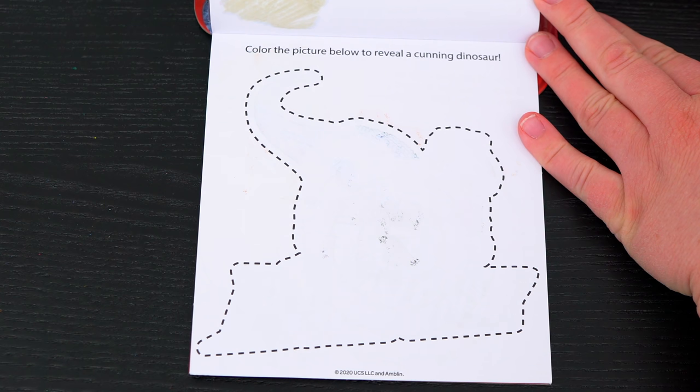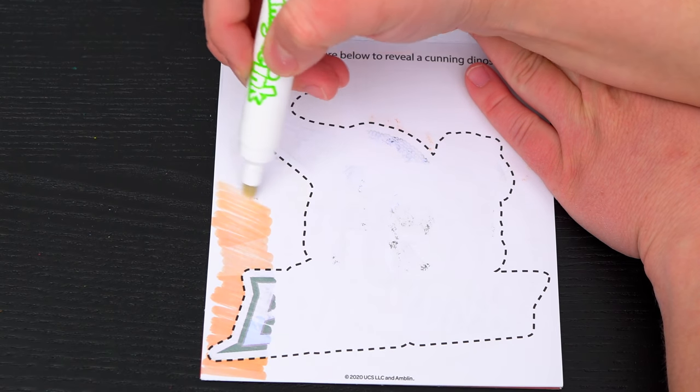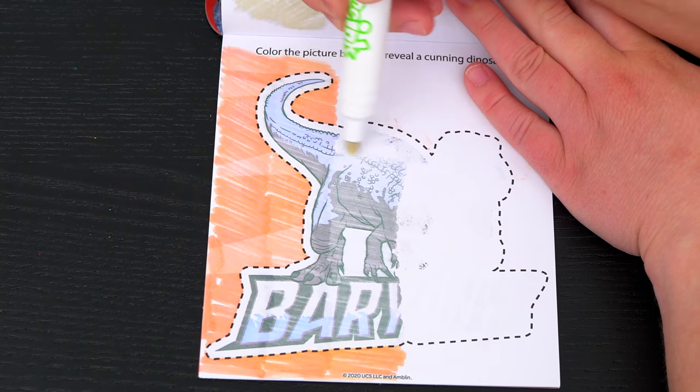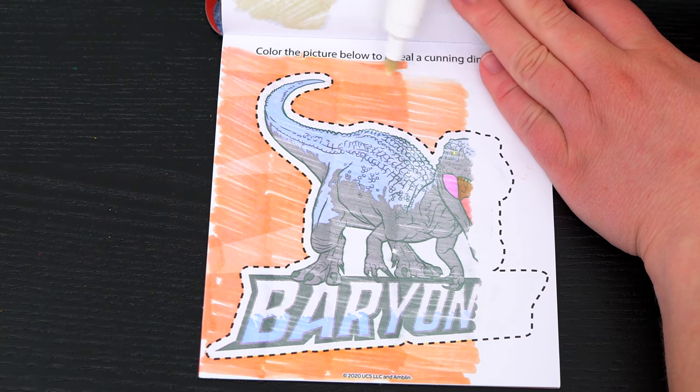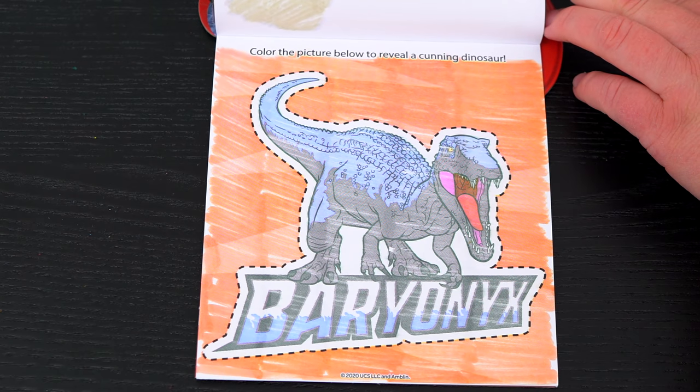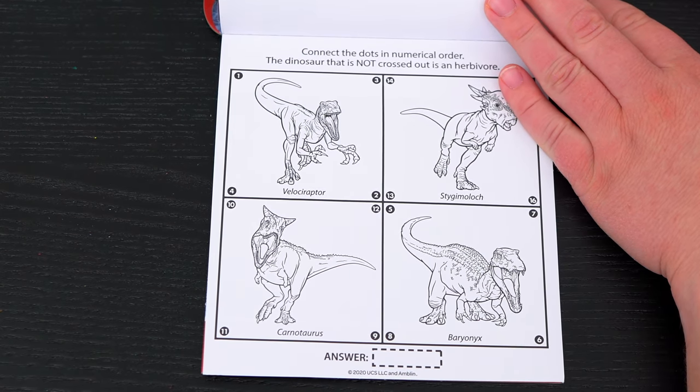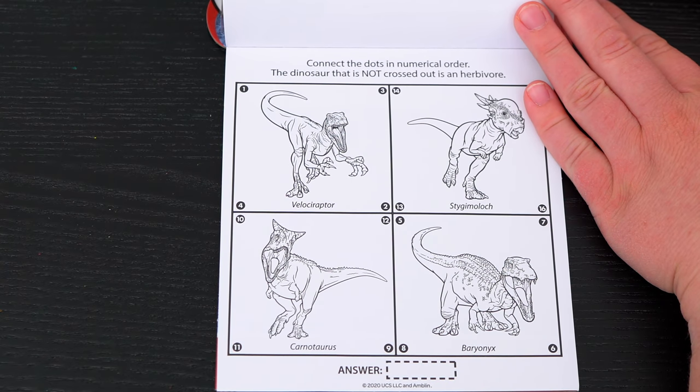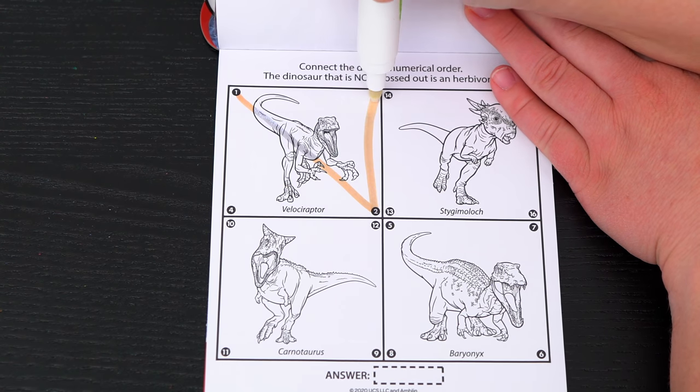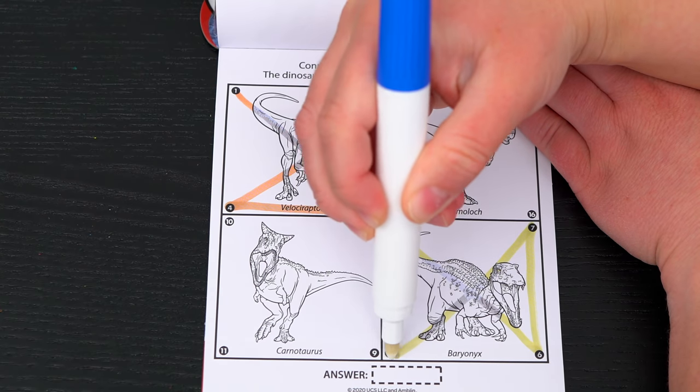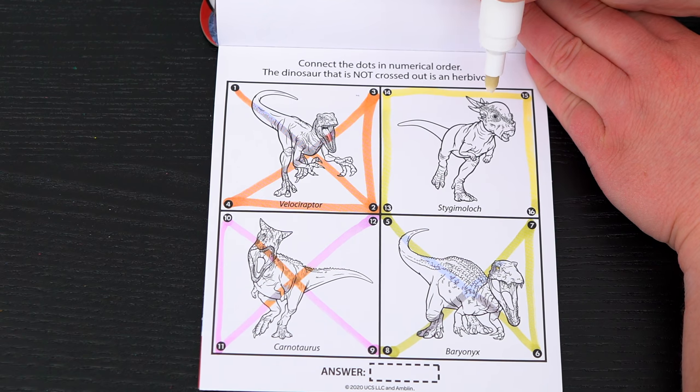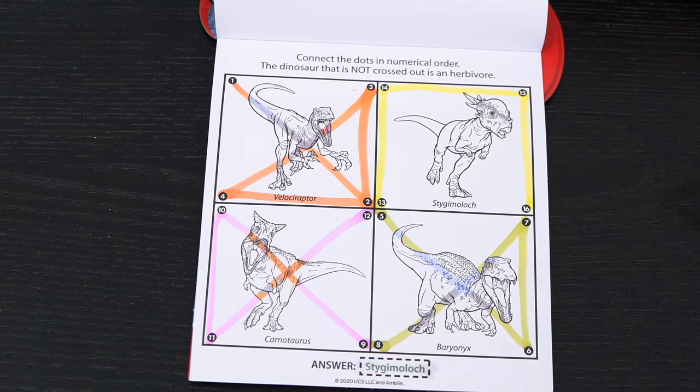Color the picture below to reveal a cunning dinosaur! It's the Baryonyx! Okay, here's the very last page! It says connect the dots in numerical order! The dinosaur that is not crossed out is an herbivore! Okay, the only one not crossed out is the Stygimoloch! What awesome dinosaurs!